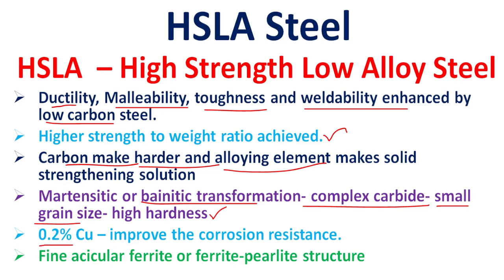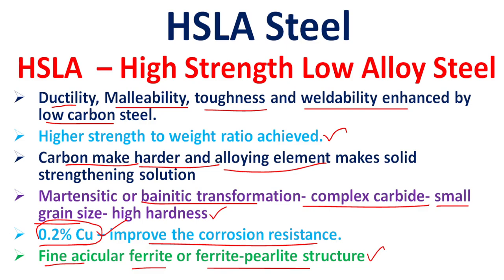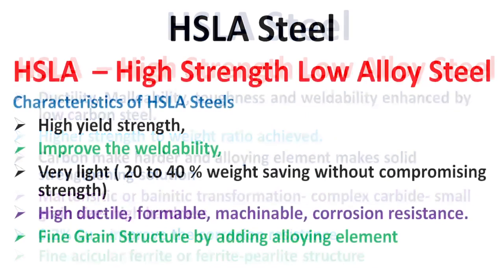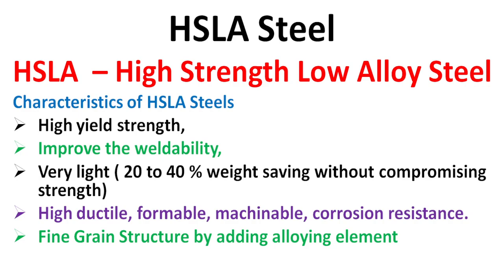Adding approximately 0.2 percent copper improves the corrosion resistance of this steel. The typical microstructure of HSLA steel is a fine acicular ferrite or ferrite-pearlite structure.